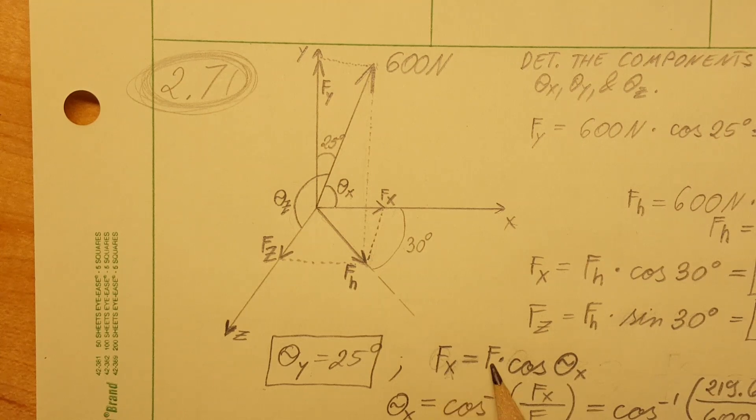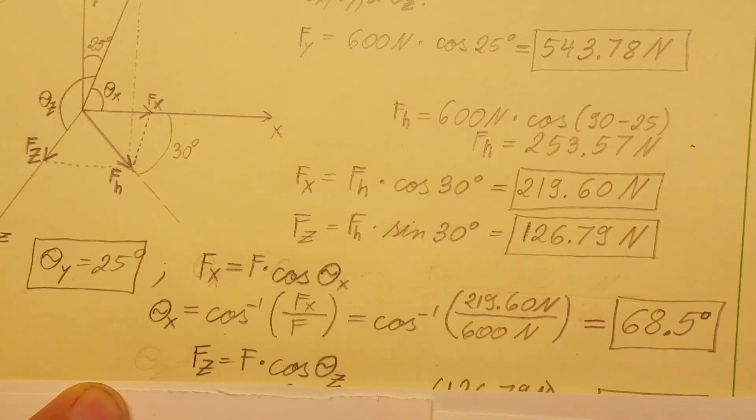We're going to write our fx equals f times cosine theta x. From here we can solve for theta with inverse cosine: fx over f. Plug in, and we're going to get 68.5 degrees.